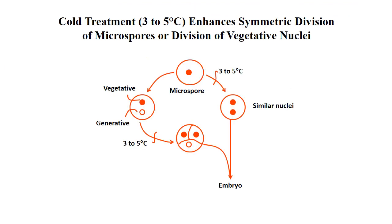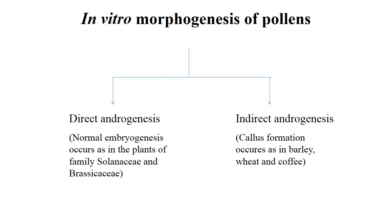This is the pathway of cold treatment at generative and vegetative phases. Coming to in vitro morphogenesis of pollens. There are two types: direct androgenesis and indirect androgenesis. In direct androgenesis, normal embryogenesis occurs as in plant families Solanaceae and Brassicaceae, and this is devoid of callus formation. But in indirect androgenesis, callus has to be produced as an intermediate, and that occurs in barley, wheat and coffee.